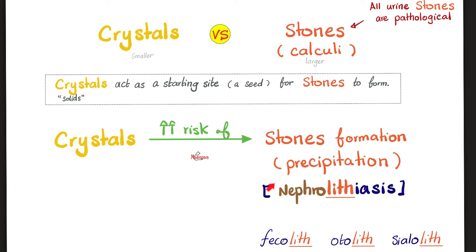A stone in the urine or in the kidney is called nephrolithiasis. A stone in the salivary gland or salivary gland duct is sialolithiasis. In the ear, it's an otolith. In the stool, a fecalith, which can lead to appendicitis if it gets stuck in the appendix, because the appendix is a blind-ended pouch.